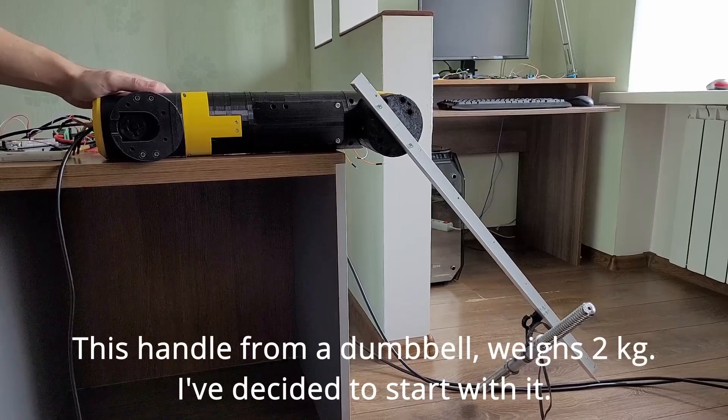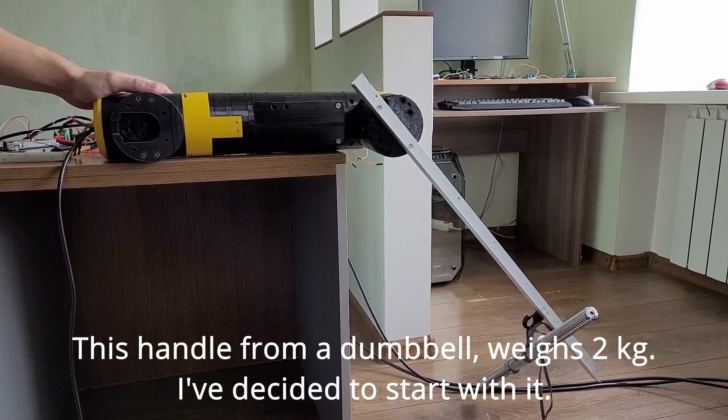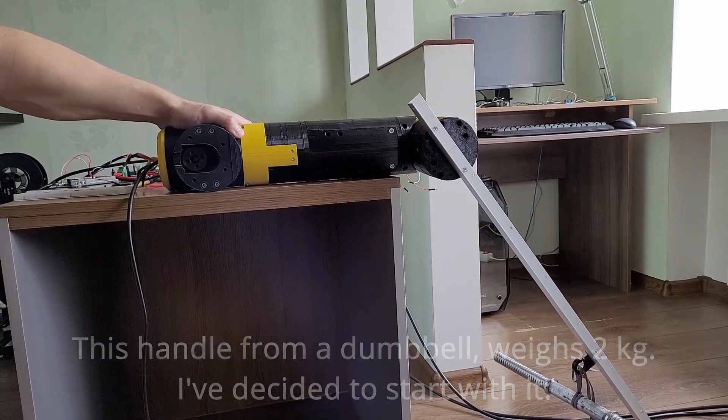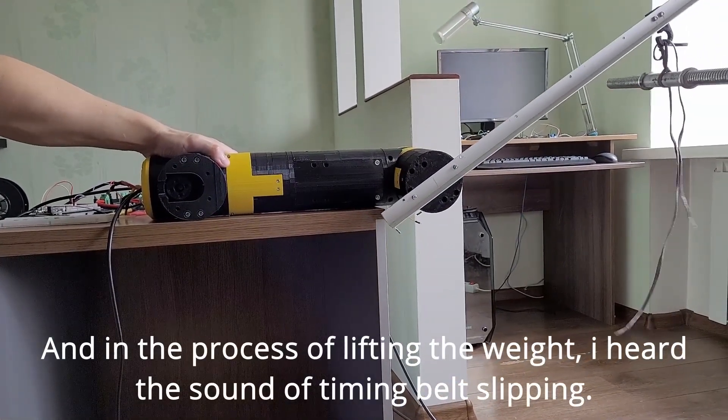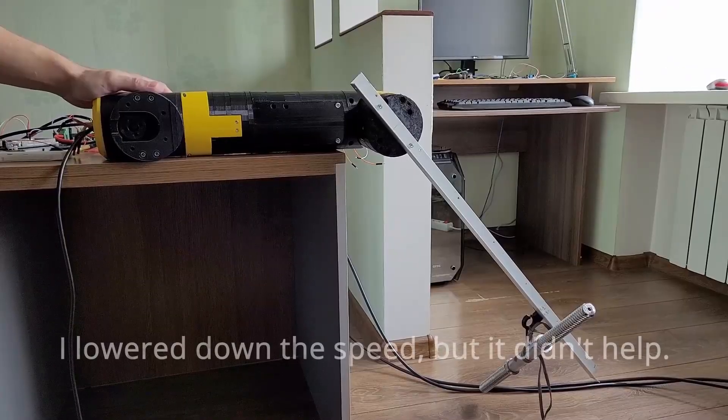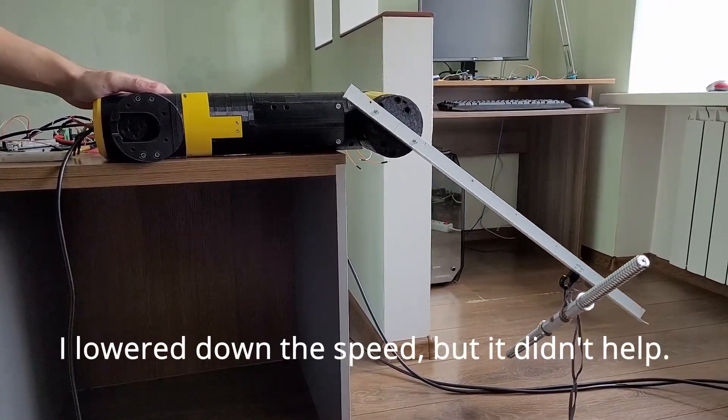This handle from the dumbbell weighs 2 kg, I've decided to start with it. And in the process of lifting the weight I heard the sound of timing belt slipping. I lowered down the speed but it didn't help.